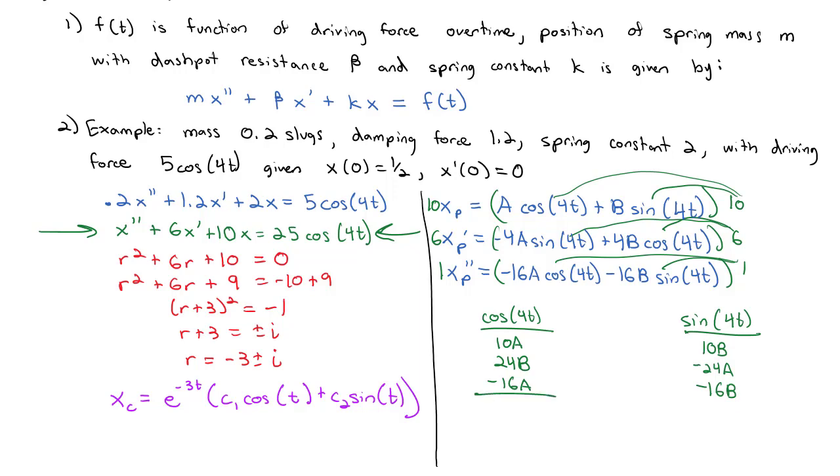So when I add those up, I get -6A + 24B = 25 for the cosine column. Adding up the other one, we get -24A - 6B = 0 because we have zero sines.